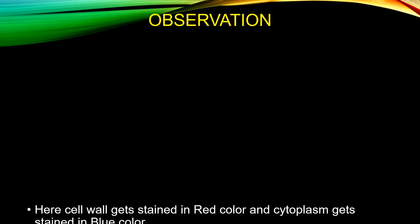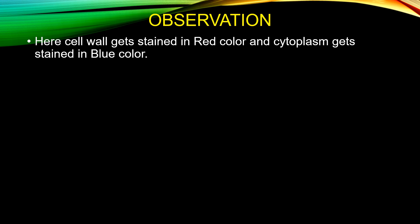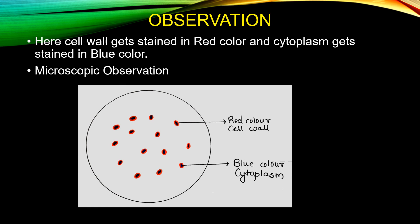Now let's see the observation. The cell wall gets stained in red color and the cytoplasm gets stained in blue color — congorex solution stains the cell wall red and methylene blue stains the cytoplasm blue. With the help of a diagram, you can see what kind of observation you will get in the microscopic field: a red color cell wall and blue color cytoplasm for the bacterial cells.